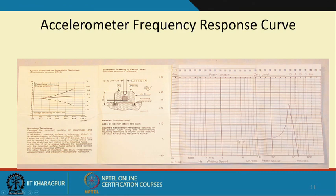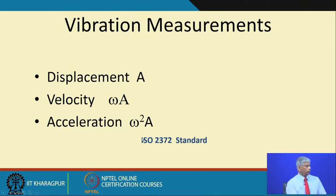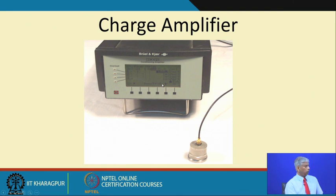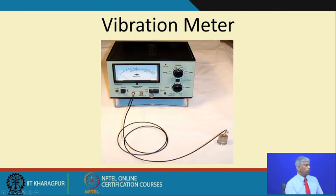When you go to the market to buy accelerometers, you will see charts showing the frequency response and the effect of different mounting methods. There is also an ISO 2372 standard for vibration monitoring which will be discussed in the next class. This is the view of the charge-type amplifier setup: the accelerometer connected via a low-noise triboelectric cable to a charge amplifier with a charge-to-voltage converter and voltage amplifier, and then to a vibration meter.